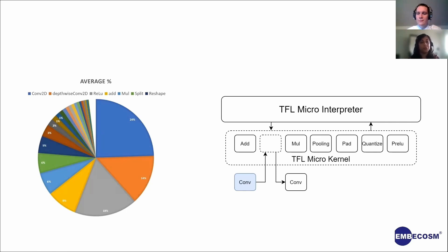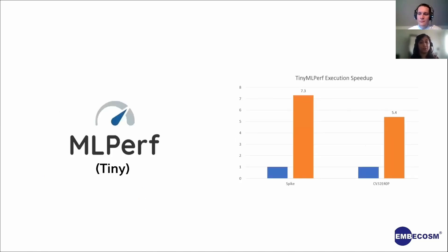To test the optimizations implemented in C and in the vector assembly, we bring up a test environment of the CV32e40p. We include the RISC-V GNU toolchain, the Spike ISA simulator, and a Verilator model for the CV32e40p. Using this environment we measure the performance change of TinyML Perf when using the optimized port of TFLite Micro. As shown in the figure, the performance of the optimized version of TinyML Perf has a speedup of roughly 7.3x on Spike and 5.4x on the Verilator model.